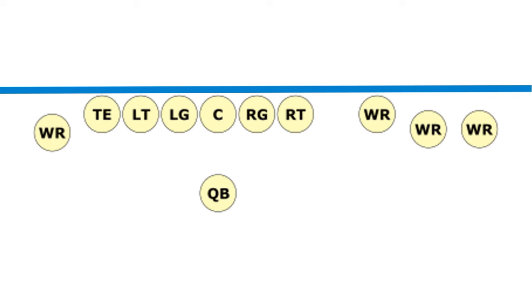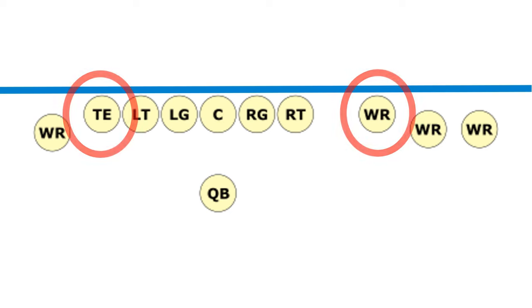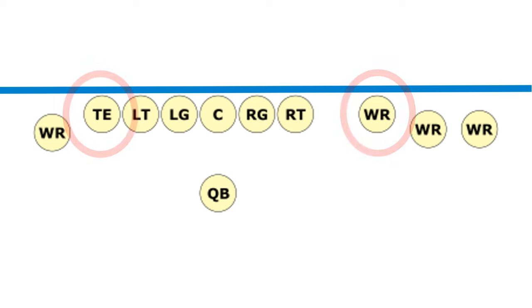The two people who are on the line of scrimmage — only the ones on the ends are able to be considered eligible wide receivers. This means you can't put a skill position player in between two offensive linemen, because then technically the wide receiver would become the offensive lineman and vice versa.